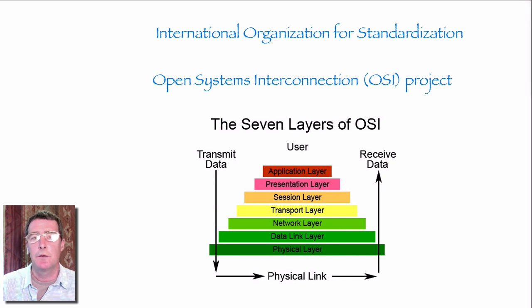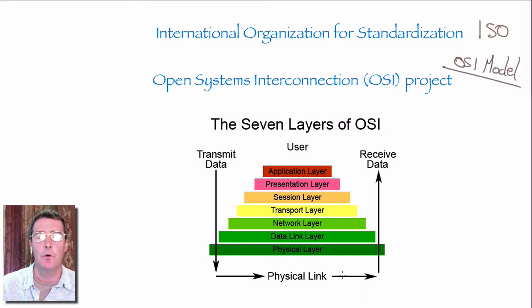The International Organization for Standardization, or ISO, created the Open Systems Interconnection Project and the OSI model. The purpose was to create a reference model for any type of data communication. By reference model, we mean that it's going to form the basis of any communication model that you want to create. However, it's designed to be modified depending on the needs of the system.